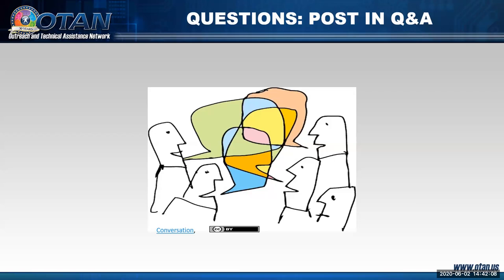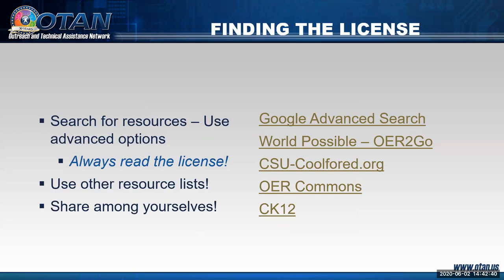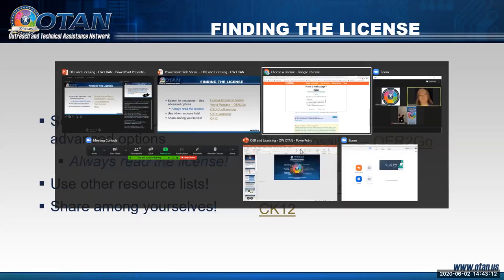Pixabay images — you need to read the license; we'll look at that shortly. Government materials are generally not copyrighted; they're under public domain or a creative commons license. Regarding this session: OTAN webinar materials are fully licensed under Creative Commons — all I ask is that you give me credit. Now let's look at some resources. I want to teach you to fish so you can find materials yourself — you must do your own due diligence to make sure they meet your needs.